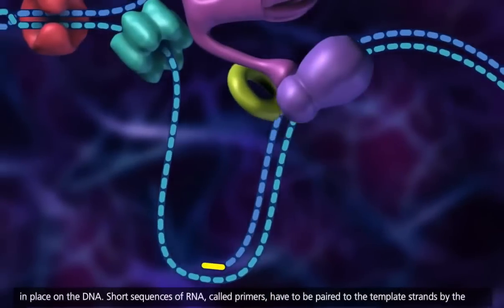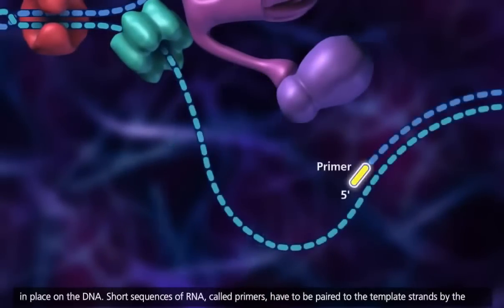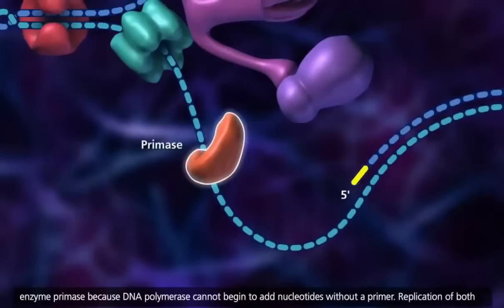Short sequences of RNA, called primers, have to be paired to the template strands by the enzyme primase, because DNA polymerase cannot begin to add nucleotides without a primer.